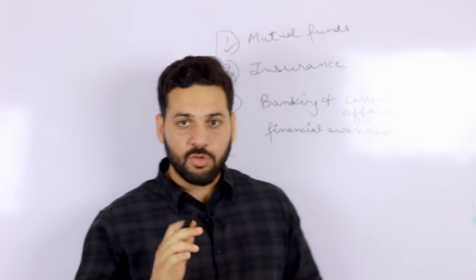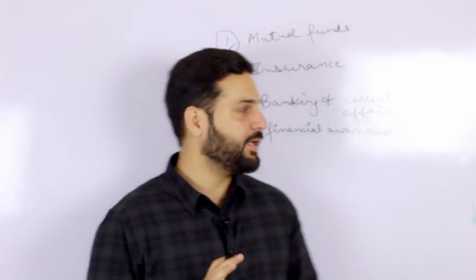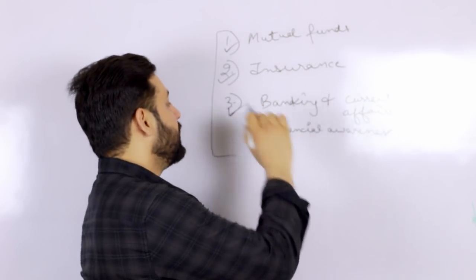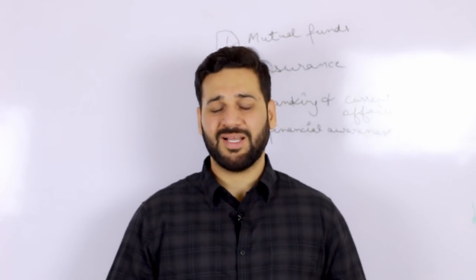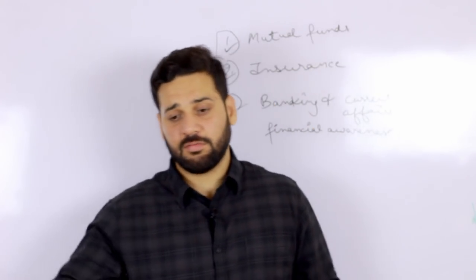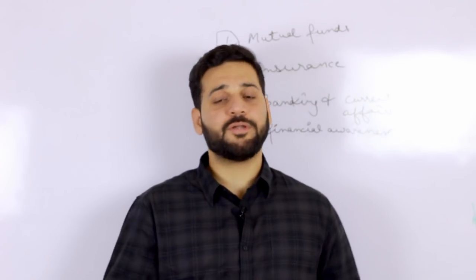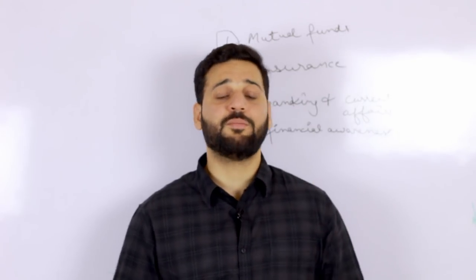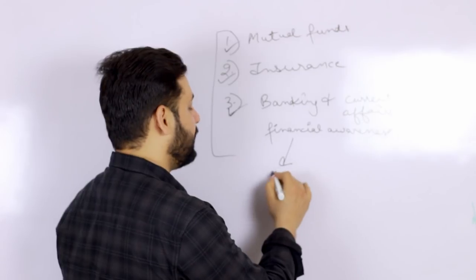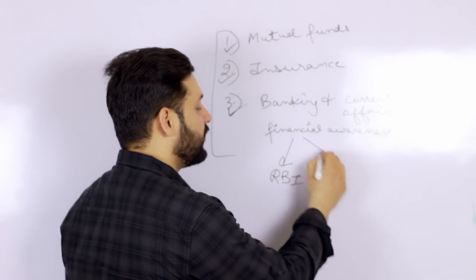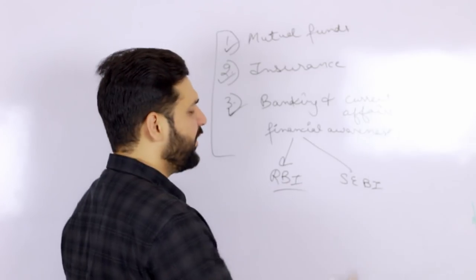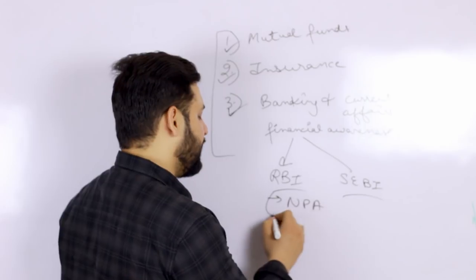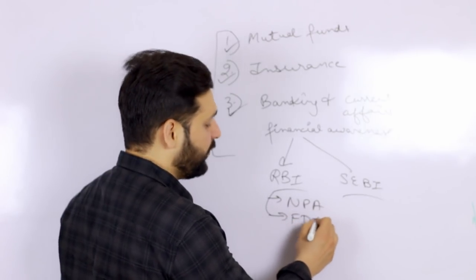Start reading the newspaper — that's really important. Whatever news is there regarding banking, current affairs, and financial markets is very important. This includes circulars by RBI and circulars by SEBI. RBI circulars regarding NPAs and FDI are very important topics.